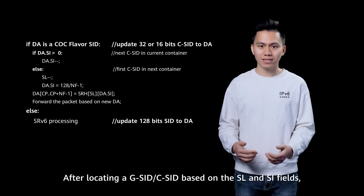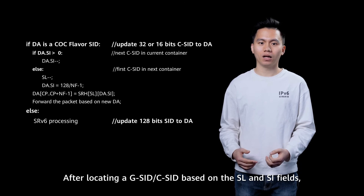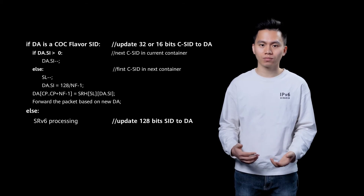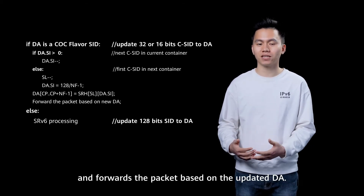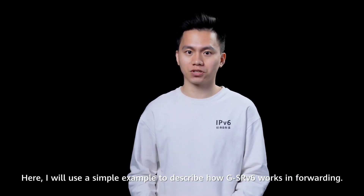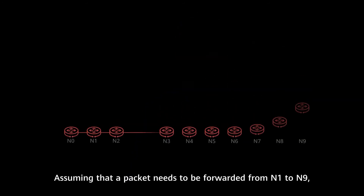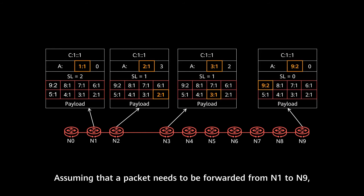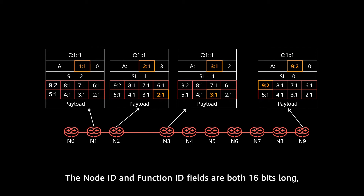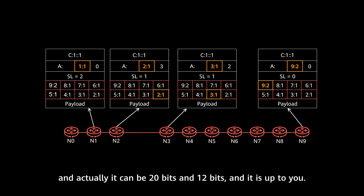After locating a G-SID or C-SID in the SRH, we can update the C-SID to the IPv6 destination address, and then forward the packet based on the updated destination address. I will use a simple example to describe how GSRV6 works in forwarding. Assuming that a packet needs to be forwarded from node 1 to node 9 and they support GSRV6. The common prefix of C-SID is 8::/64, and the node ID and function ID fields are both 16-bit long — though actually it can be like 20-bit and 12-bit; it's up to you.